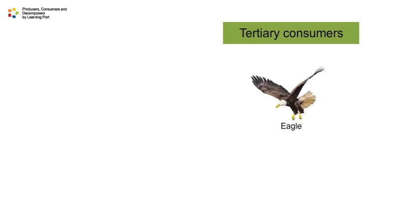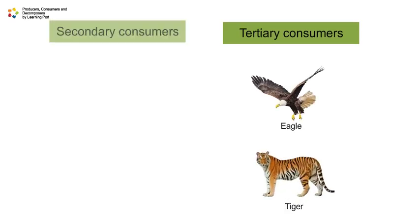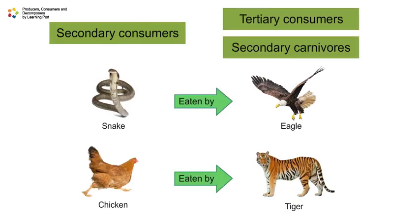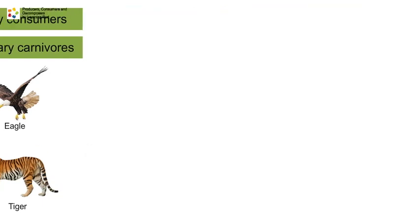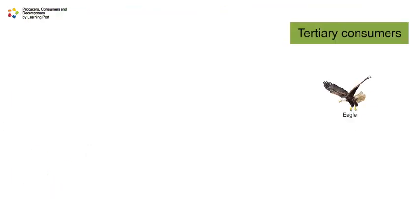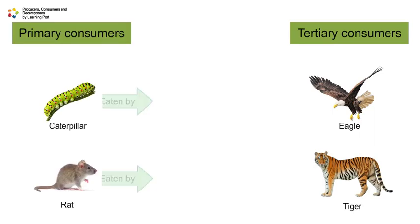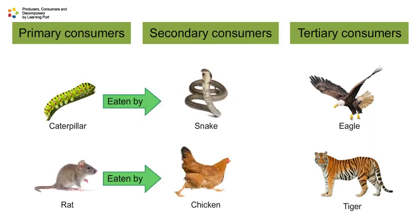Tertiary consumers eat secondary consumers. They are also known as secondary carnivores. Tertiary consumers are usually bigger than primary or secondary consumers.